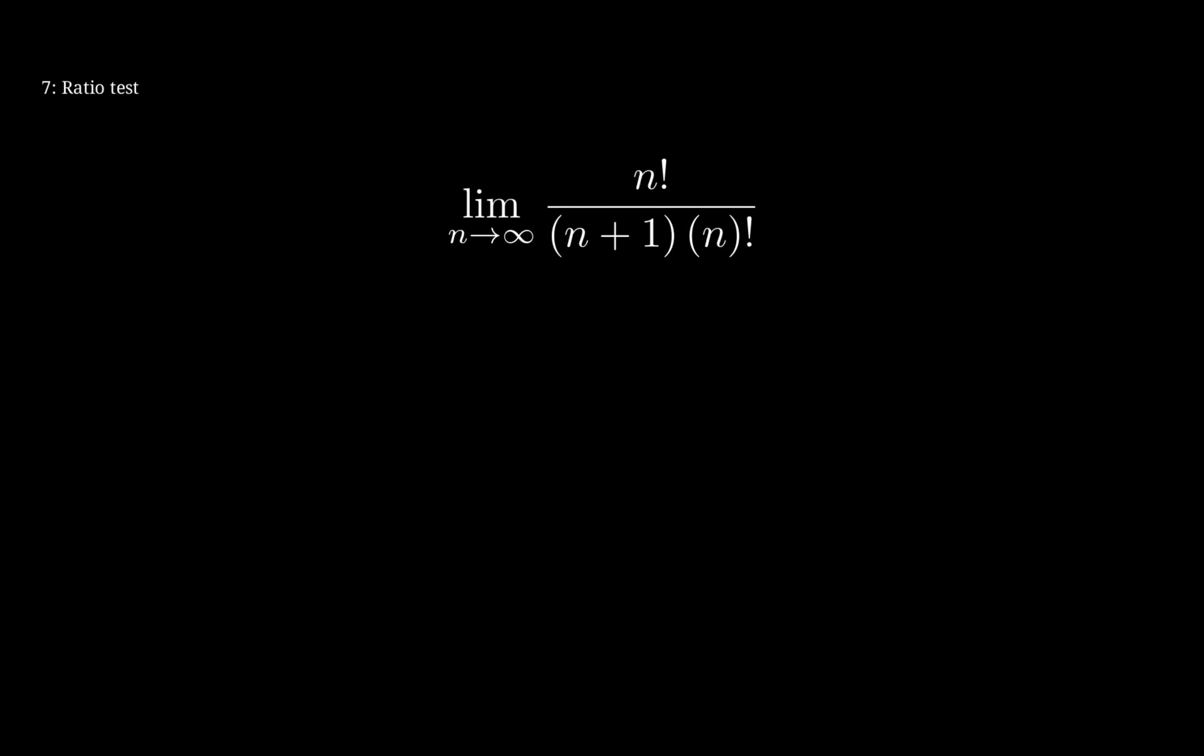As you can see, we're going to cross out n factorial. And we're going to get that value. Plugging in infinity will give you 1 over infinity, which will yield a 0. And because r is 0, it will converge.